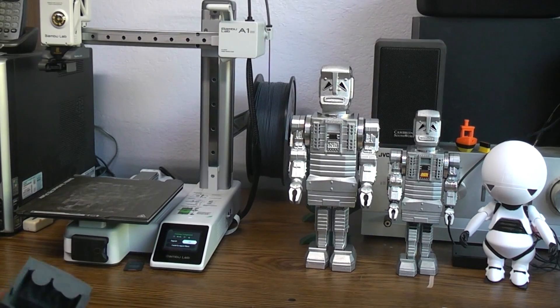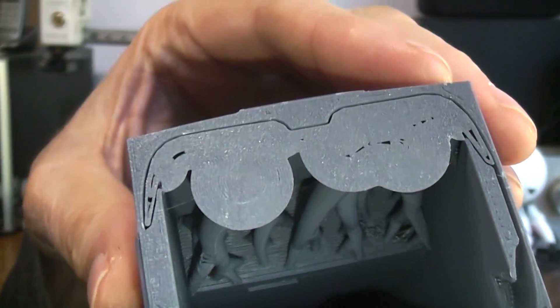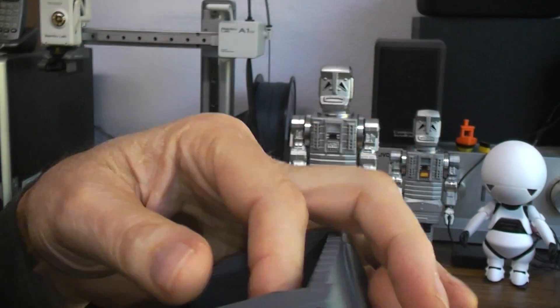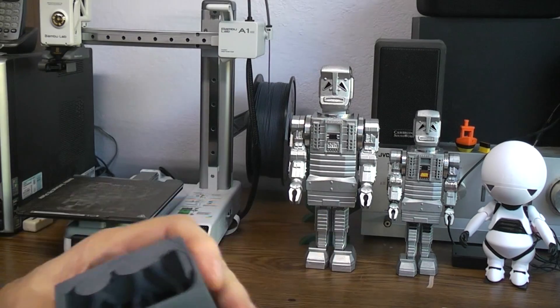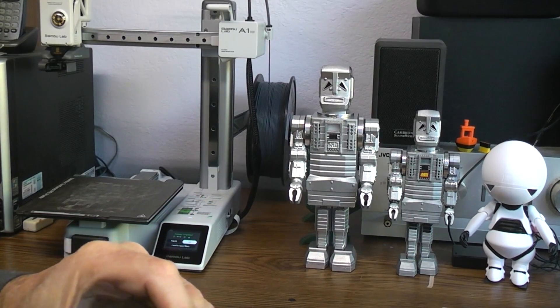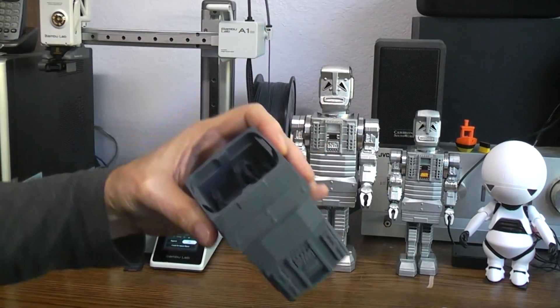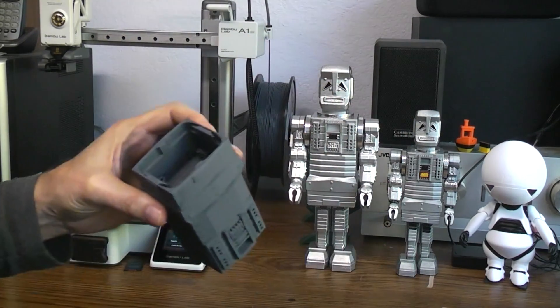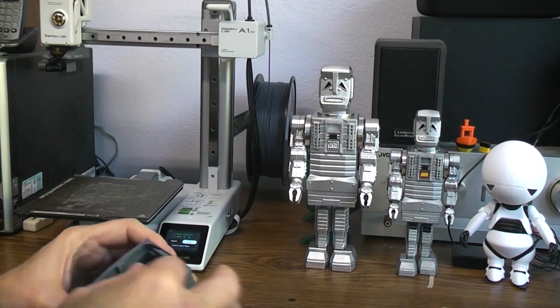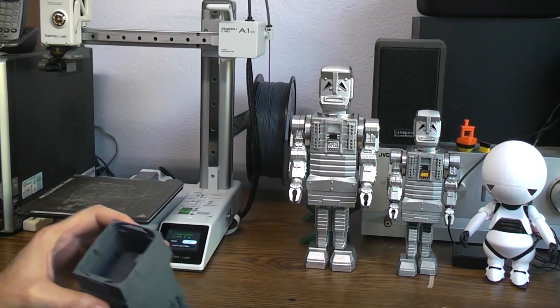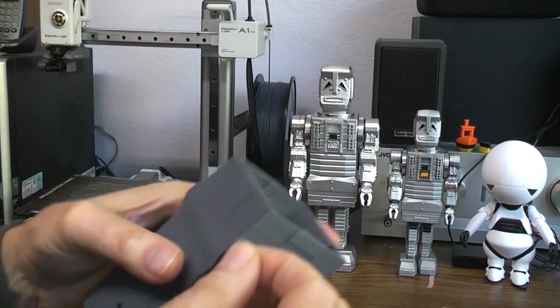So far I haven't needed any tools to pull out the support, so that's good. So you can see the tree supports going in and basically holding up the bottom of the battery box. Okay, so that all looks clean.